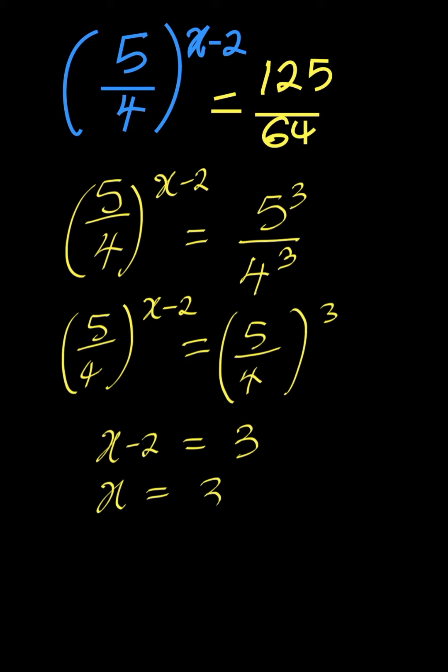Then, the minus 2 will be transferred to the right hand side, it turns to plus. And when you add 3 and 2 together, you get 5.